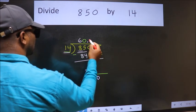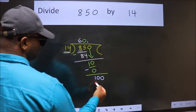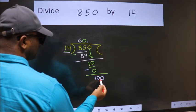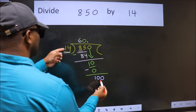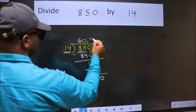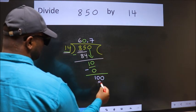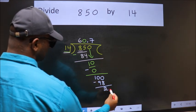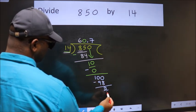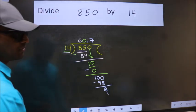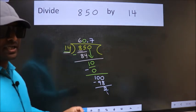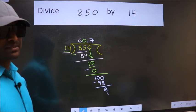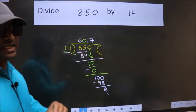So now we can put dot and take 0. So 100. A number close to 100 in the 14 table is 14 sevens, 98. Now we subtract. We get 2. And you continue the division. I am not doing that. Did you understand where the mistake happens? You should not do that mistake.